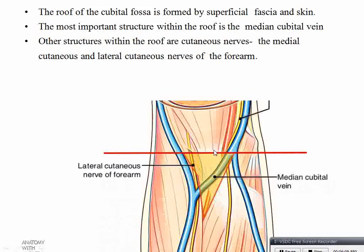The roof of the cubital fossa is formed by the skin and superficial fascia. The most important structure within the roof is the median cubital vein, which connects the cephalic and basilic veins — the cephalic vein lies laterally and the basilic vein lies medially. Other structures within the roof are cutaneous nerves: the lateral cutaneous nerve of the forearm, a continuation of the musculocutaneous nerve lying along the cephalic vein, and the medial cutaneous nerve of the forearm, a branch of the medial cord of the brachial plexus lying along the basilic vein.